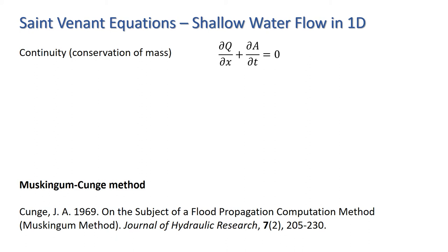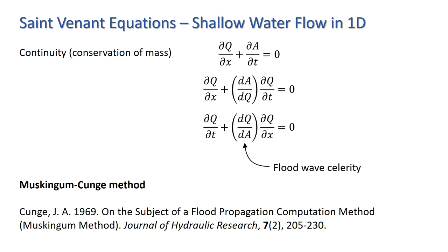Let's have a look at the continuity equation in the case where there's no lateral inflow. Assuming that we can define a relationship between q and A, we can apply the chain rule to the dA by dt term and rewrite this in the form dq by dx plus dA by dq times dq by dt equals zero. Or equivalently, dq by dt plus dq by dA times dq by dx equals zero. This formulation provides the basis for the Muskingum-Cunge method.